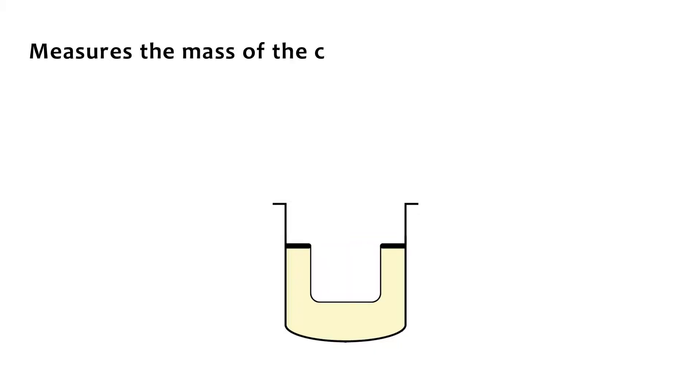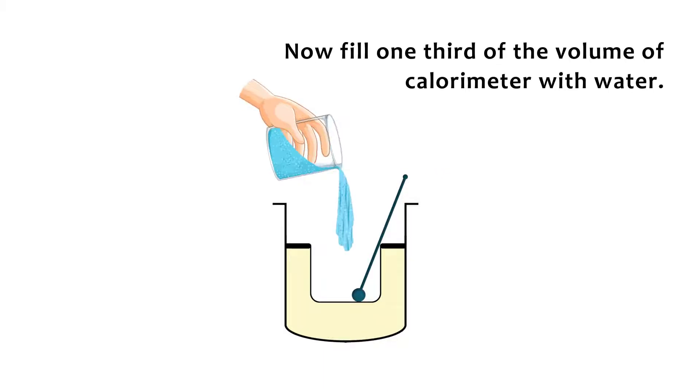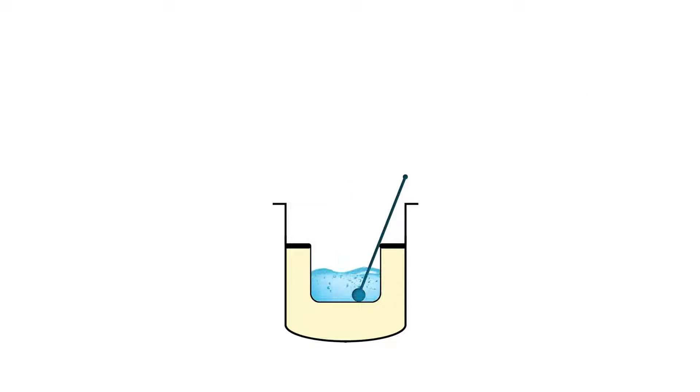Procedure: Measure the mass of the calorimeter along with the stirrer. The mass of the calorimeter is equal to M1. Now fill one third of the volume of the calorimeter with water. Measure its mass and its temperature. Mass of the calorimeter with water is equal to M2. Therefore, the mass of water is equal to M2 minus M1. The temperature of water in the calorimeter is equal to T1.